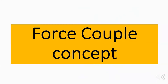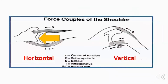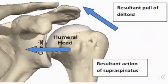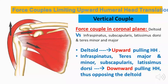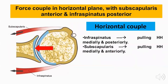There are two force couples at the glenohumeral joint: the vertical couple and the horizontal couple. The vertical couple acts between the deltoid versus the infraspinatus, subscapularis, latissimus dorsi, teres minor, and teres major, preventing the upward pull of the deltoid on the humeral head and keeping it centered on the glenoid. The horizontal couple is maintained in the horizontal plane between the subscapularis anteriorly and the infraspinatus posteriorly — the infraspinatus pulling the humeral head medially and posteriorly, while the subscapularis pulls it medially and anteriorly.